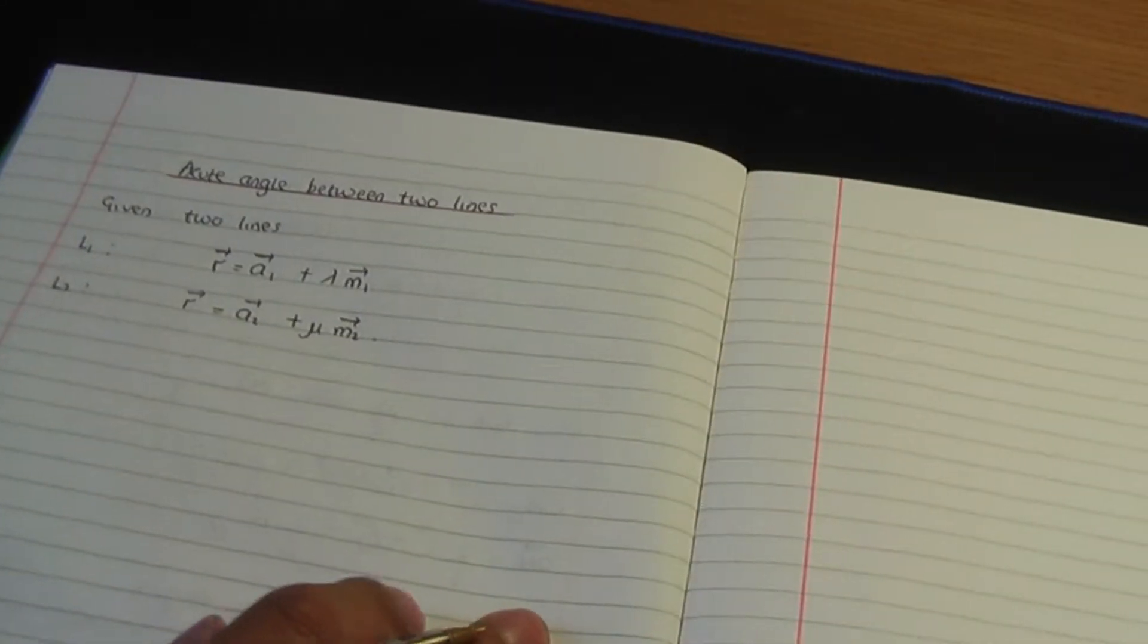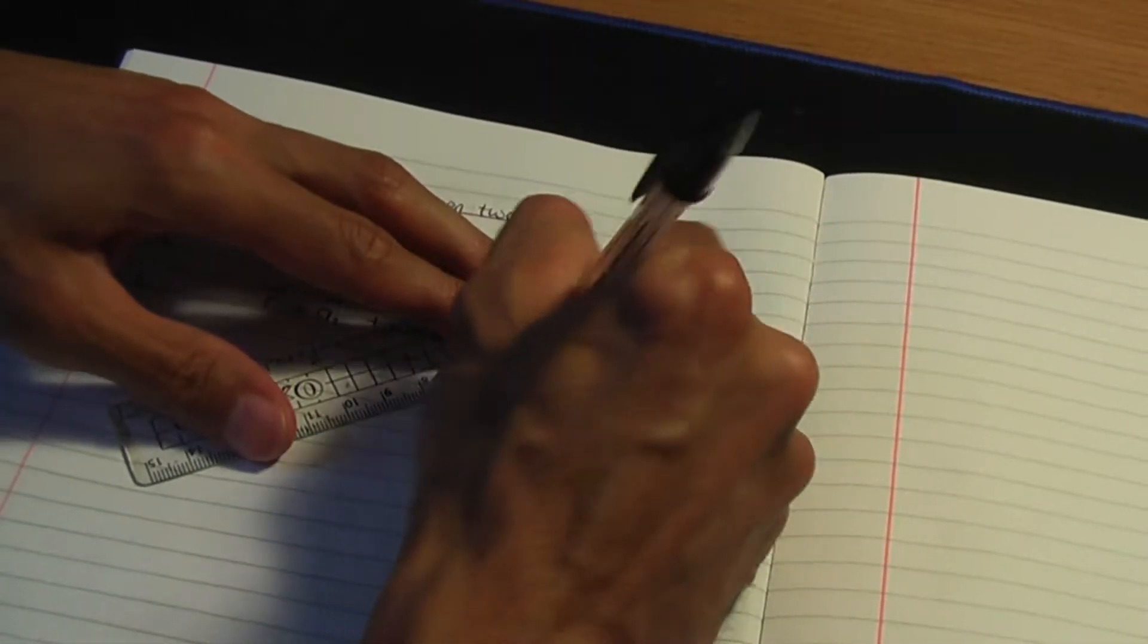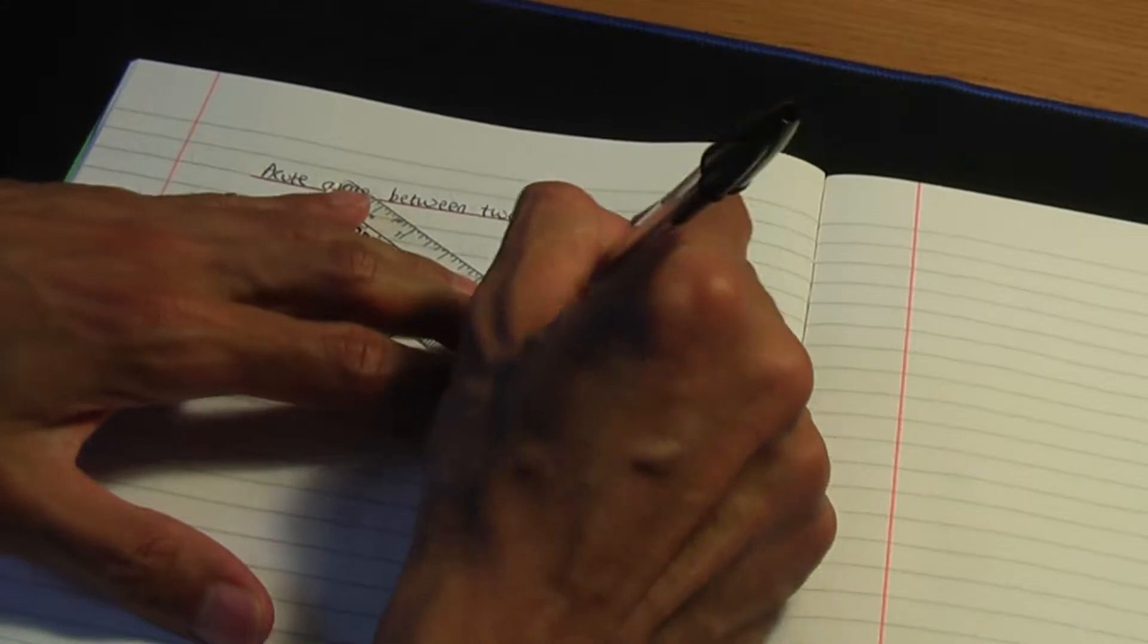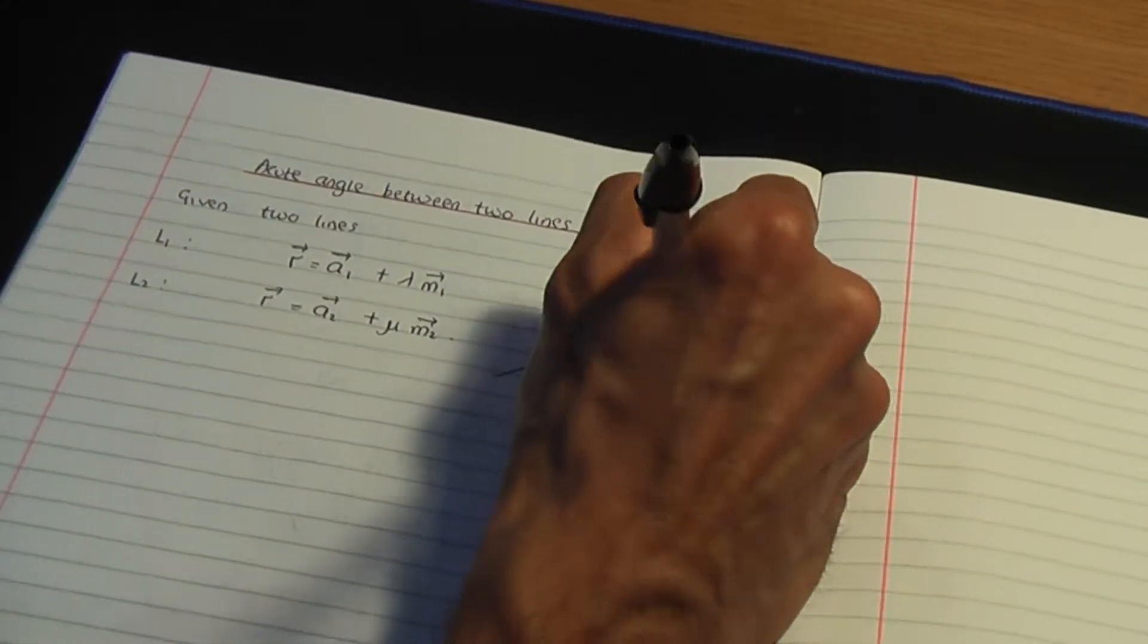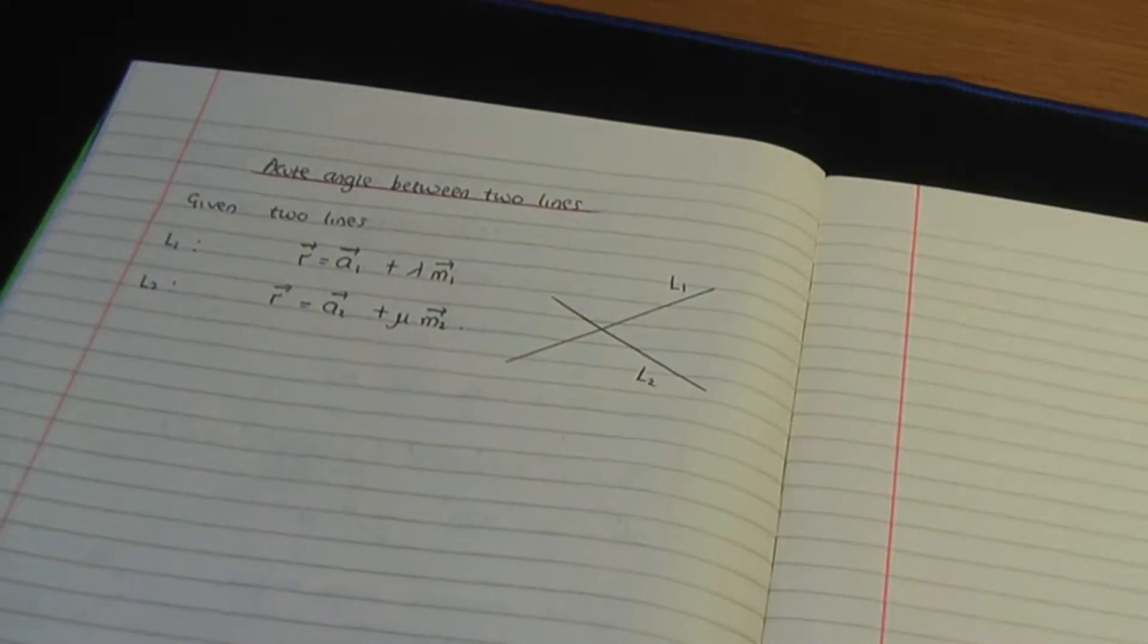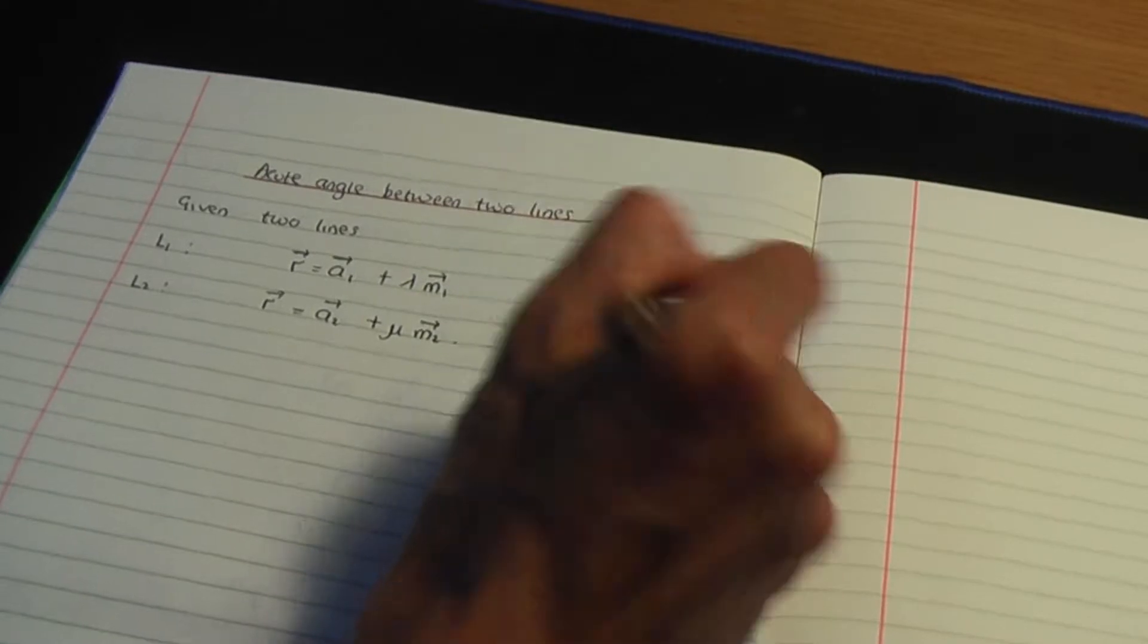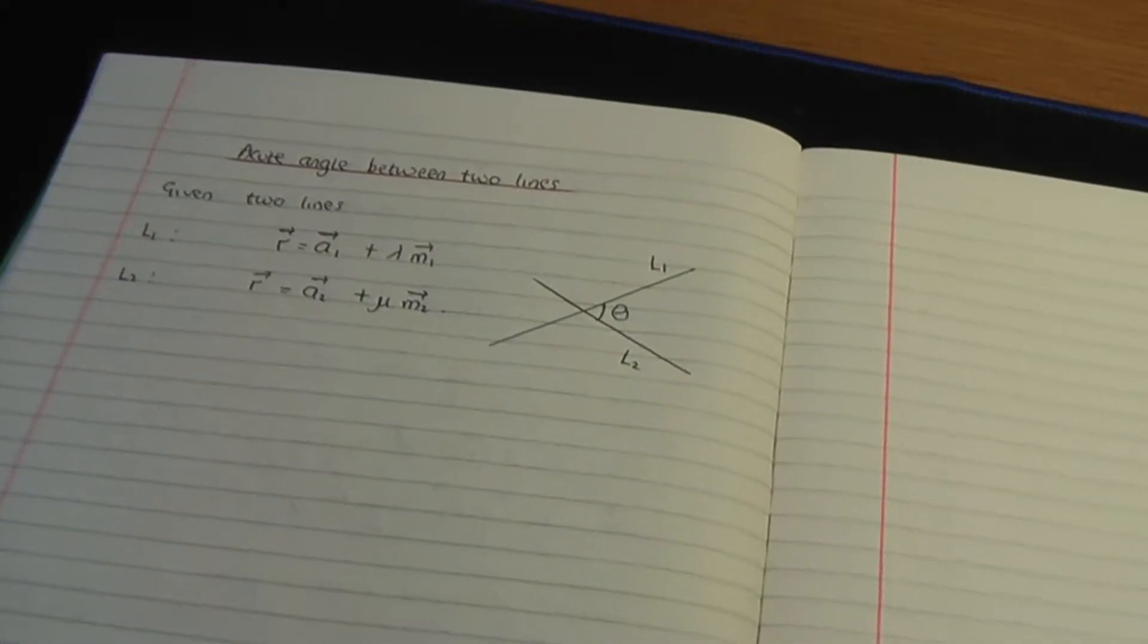So let's have a diagram also. If I have two lines like so, here is L1 and this is L2. I'm going to give you a result in order to work out the angle between the lines. So I'll call that angle theta.